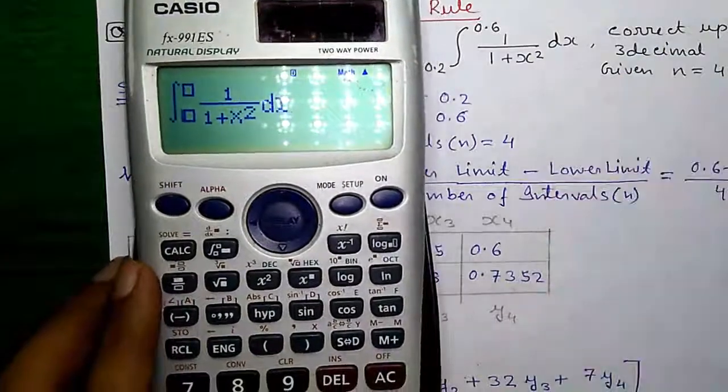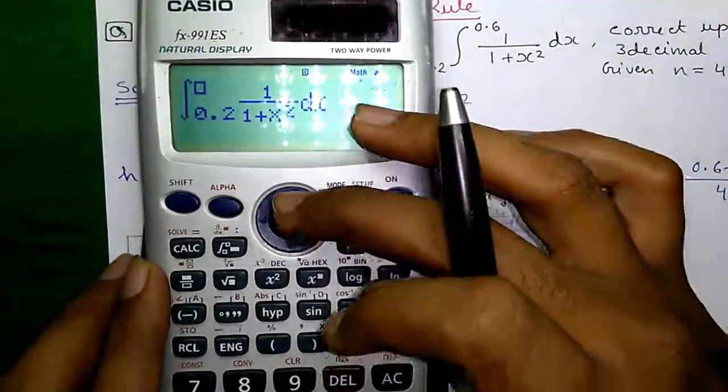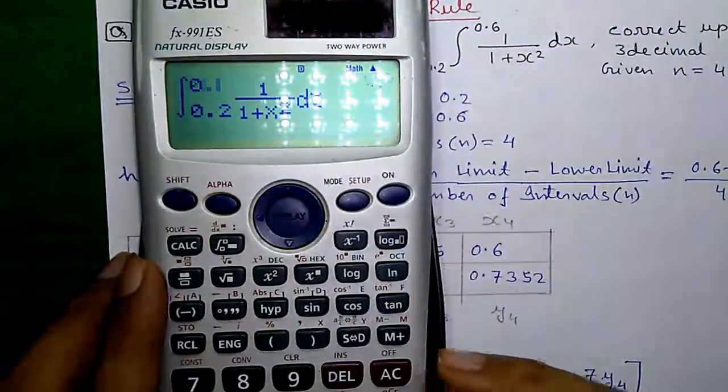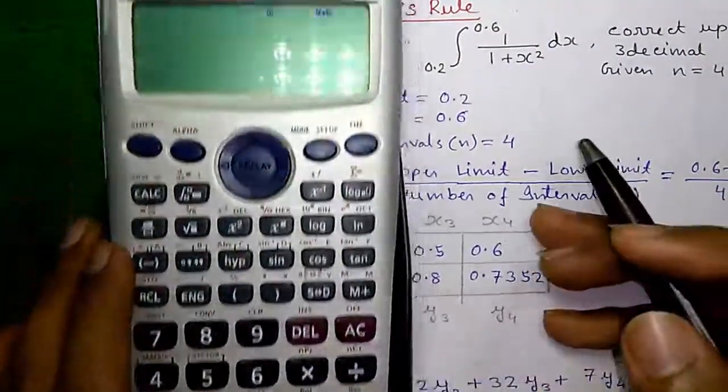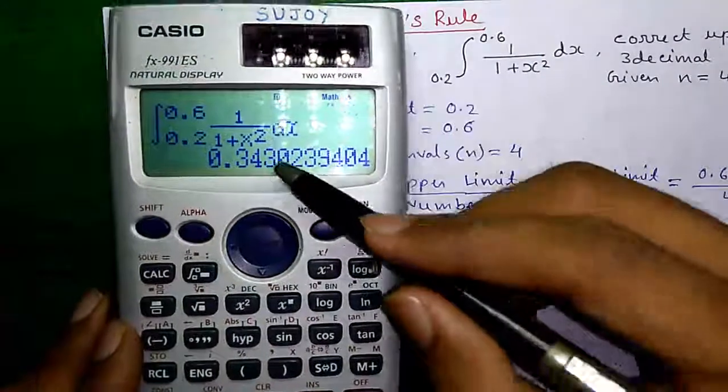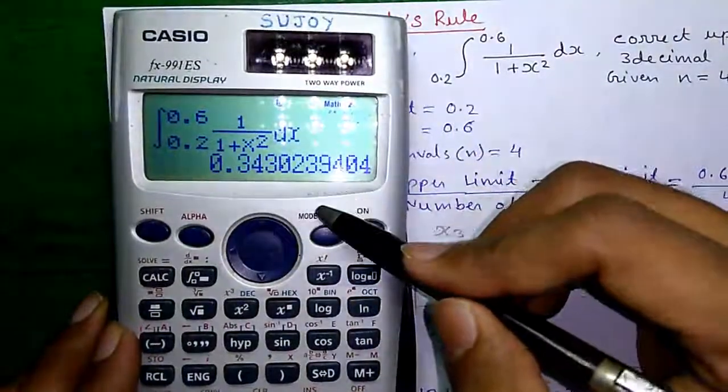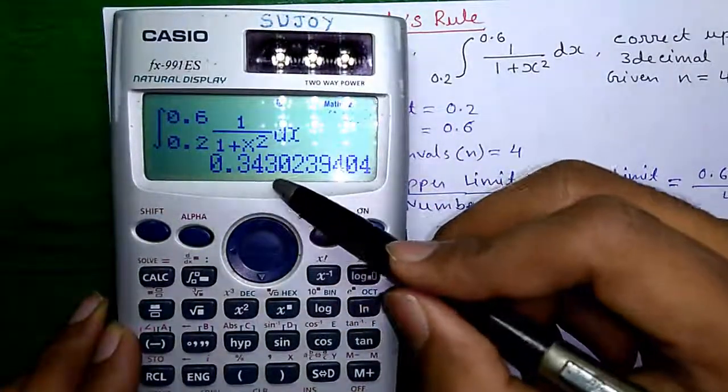Enter the lower limit 0.2 and the upper limit 0.6, and press the equals button. It will give you the integration answer directly, which is 0.3430.